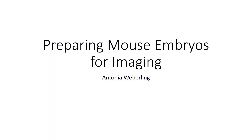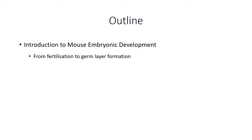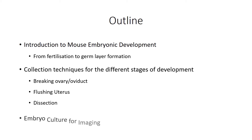Hello. In this section we will focus on how to prepare mouse embryos for imaging. For this we will first go through the basics of mouse embryogenesis, starting at the time point of fertilization until germ layer formation during gastrulation. Then we will look into the different collection techniques which are dependent on the different stages of development. In the end we will discuss how embryos are cultured for inverted light microscopy.